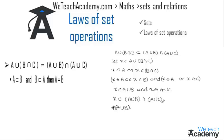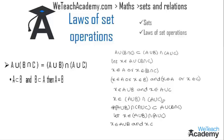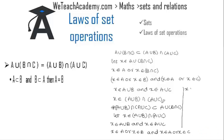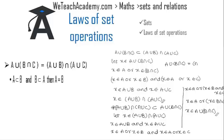Now let us prove that (A union B) intersection (A union C) is a subset of A union (B intersection C). Let x belong to (A union B) intersection (A union C). We can write this as: x belongs to A union B and x belongs to A union C, which means x belongs to A or x belongs to B, and x belongs to A or x belongs to C. This gives x belongs to A, or x belongs to B and C, which means x belongs to A or x belongs to B intersection C, so x belongs to A union (B intersection C). Therefore, (A union B) intersection (A union C) is a subset of A union (B intersection C), and we conclude A union (B intersection C) equals (A union B) intersection (A union C).